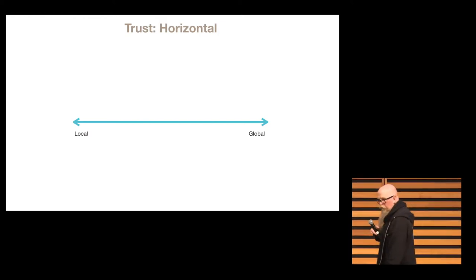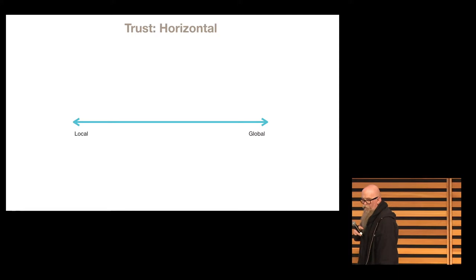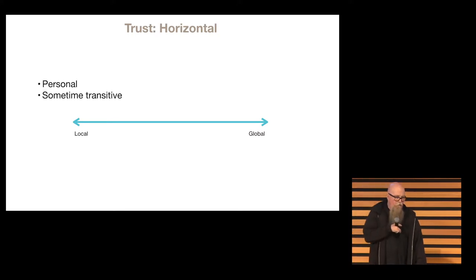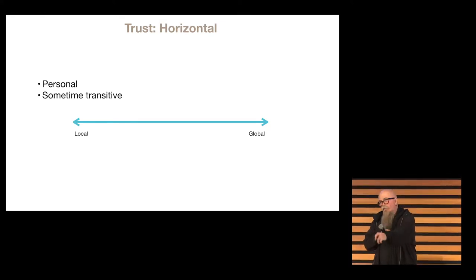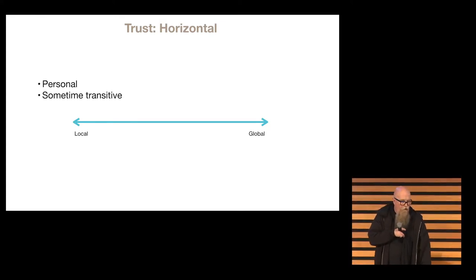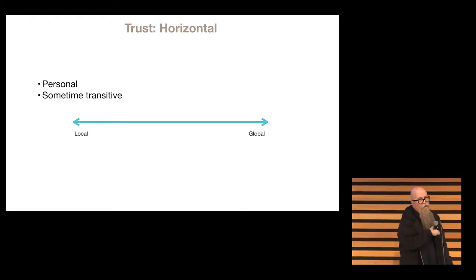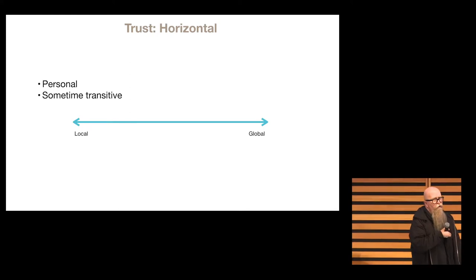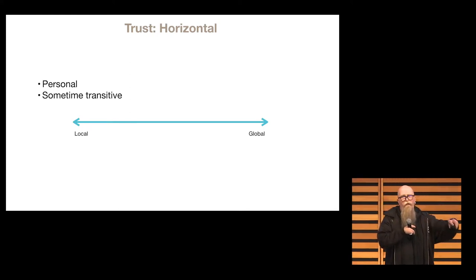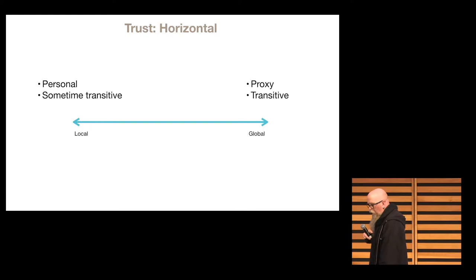He describes trust across two axes. The first is local versus global, okay? So, an example of local trust is personal, right? I know my friend and I trust them because I've had a lot of experience with them. Or I know somebody in my family and I trust them because I've had a lot of experience with them. Sometimes that's transitive, but it's not deeply transitive, right?